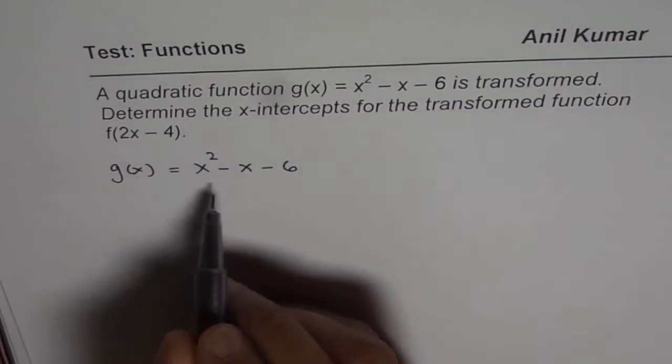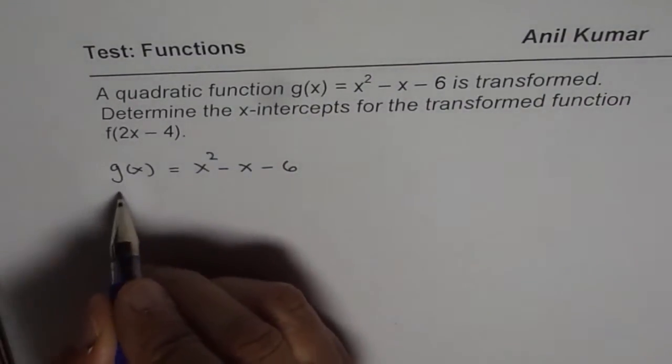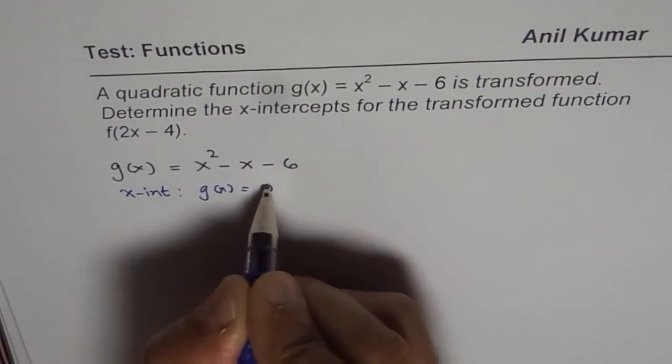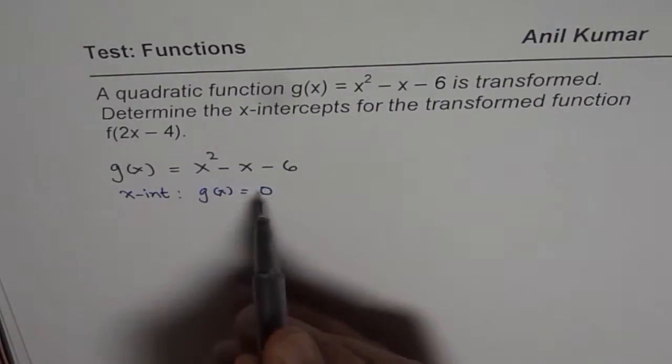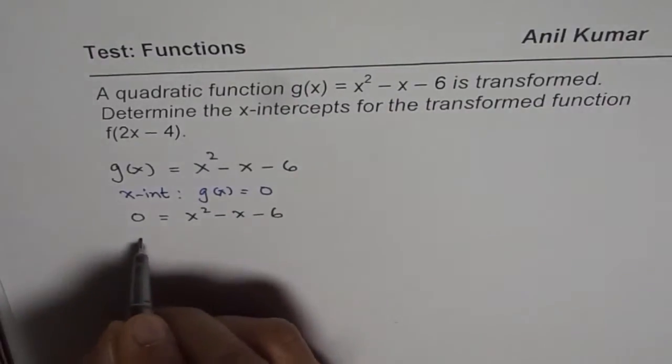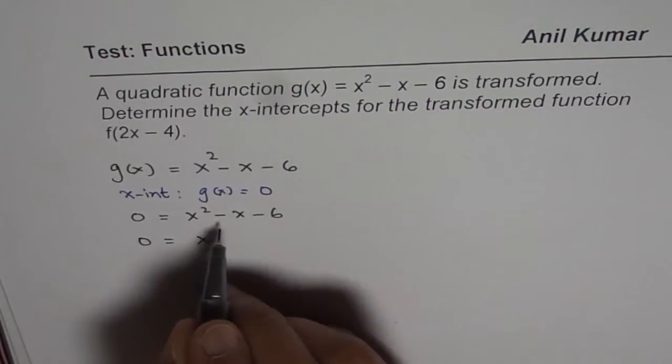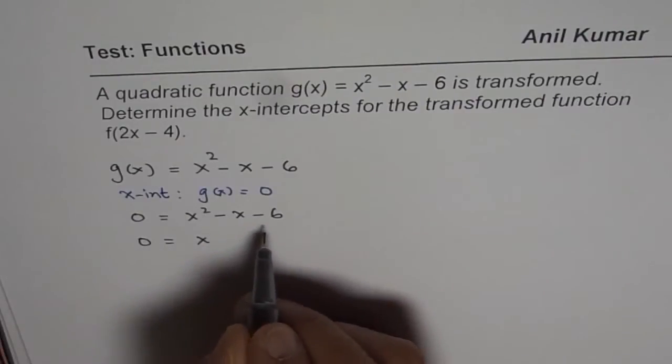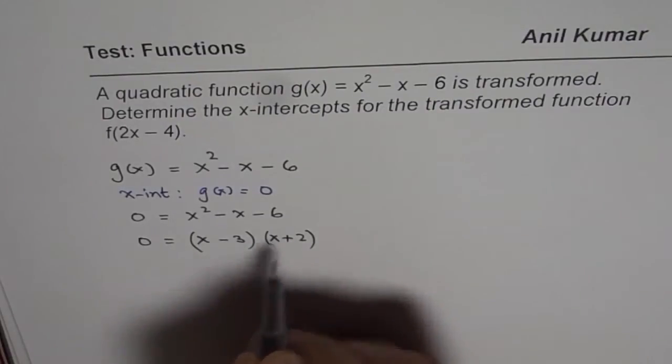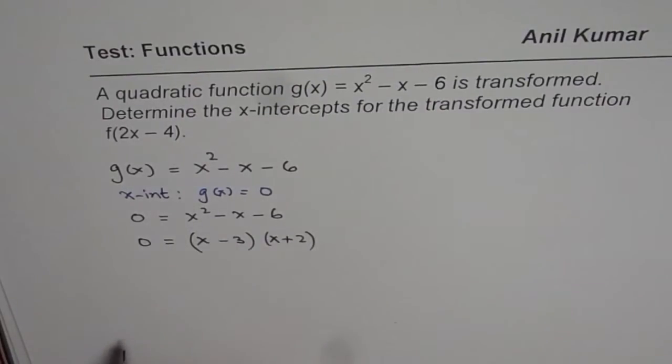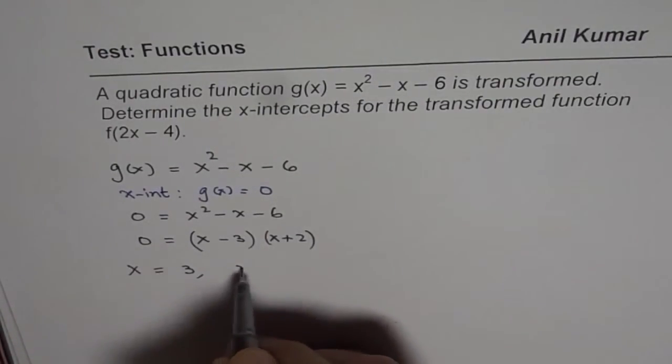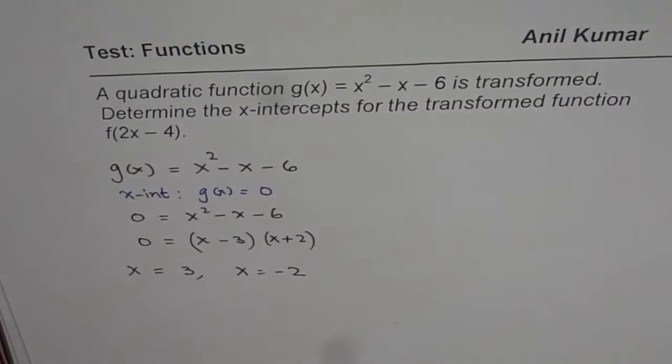To find x-intercepts, we equate g(x) = 0. So 0 = x² - x - 6. Factoring: we need -3 and +2, giving us (x - 3)(x + 2). This clearly indicates that x = 3 and x = -2 are the two x-intercepts.